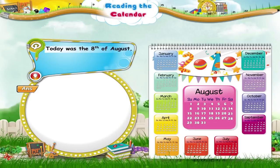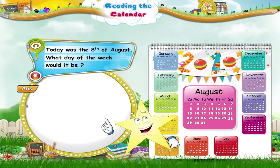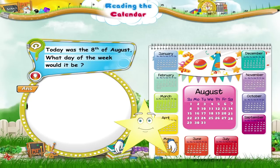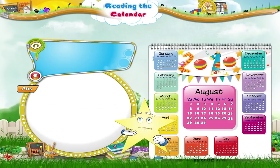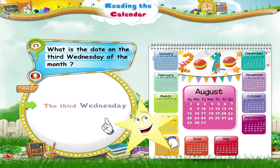Suppose I told you today was the 8th of August. What day of the week would it be? Exactly, Starry! The 8th of August is a Sunday, and you have a holiday today. Can you tell me what is the date on the 3rd Wednesday of the month, Starry? The 3rd Wednesday of the month is the 18th. That was really fast, Starry!